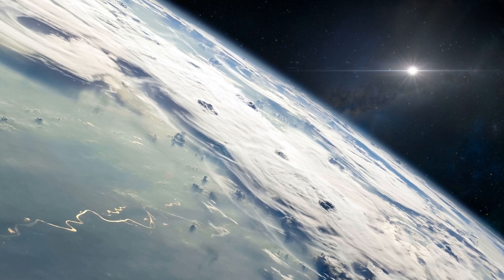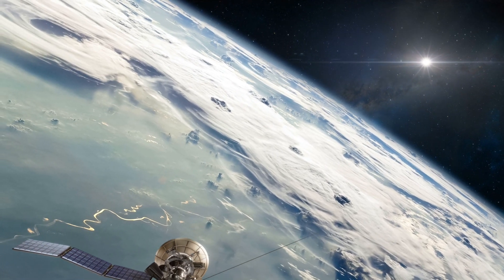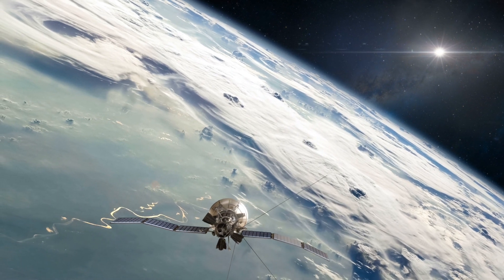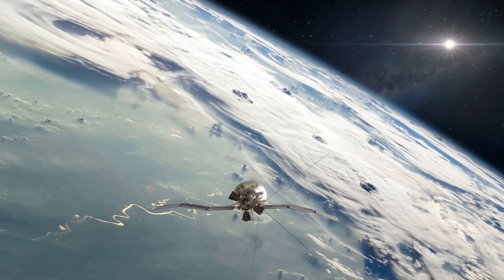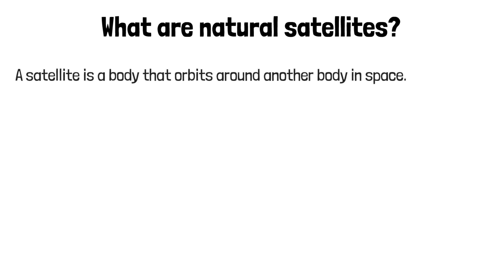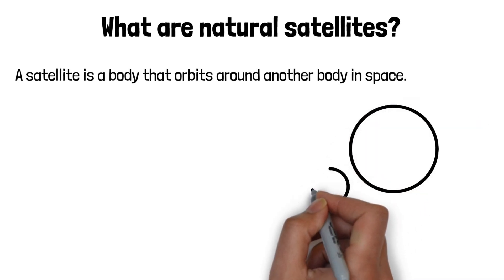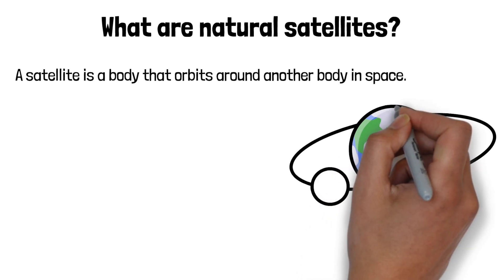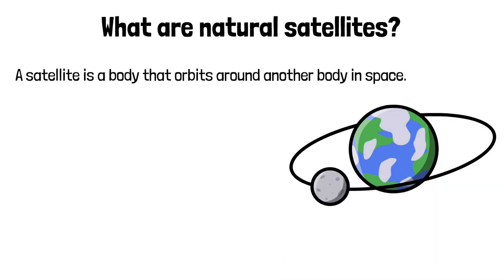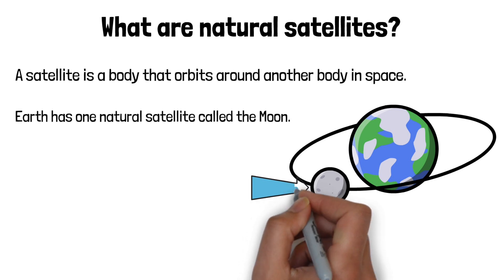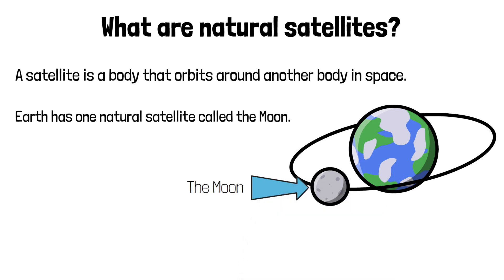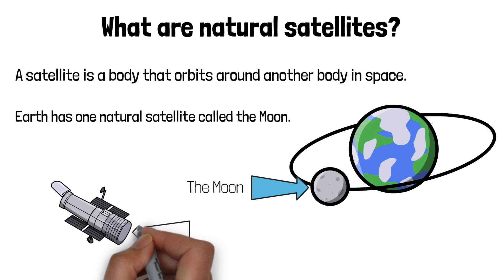We then have artificial satellites which are manufactured and launched into space from Earth by rocket. To summarize, a natural satellite is a body that orbits around another body in space and is formed by natural processes such as planets which orbit the sun and moons which then orbit the planets. But then we have artificial satellites which are manufactured and launched into space. I'll produce another video all about artificial satellites and their orbits.